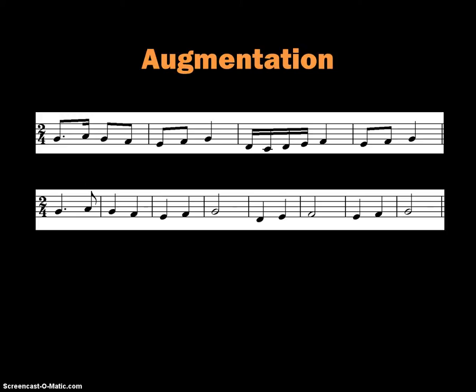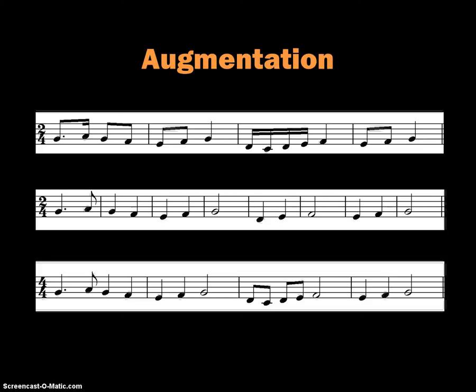And actually, I screwed up one measure in there. The eighth notes become quarter notes. Quarter notes become half notes. And notice, in this example, I kept the 2-4 meter, and we've now got eight measures of music instead of four. If I were to change the meter to 4-4 time, you can see that that preserves the four measures and those ratios there.